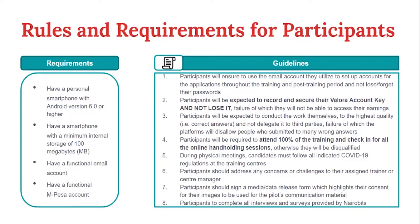The other part of this presentation covers the guidelines you are required to follow throughout the program. The first one is the user email — you're supposed to have one email address that you'll use in all your accounts, and that will be used for communication by Narrowbits whenever deemed necessary. The second requirement is you're supposed to have your Valora key and account number and you should not lose it. This will be very useful just in case you have to replace your phone or set up your Valora account again. It's very important you note the key down and make sure you are the only one who has access to it, because if it falls in the wrong hands, chances are you're going to lose your funds.